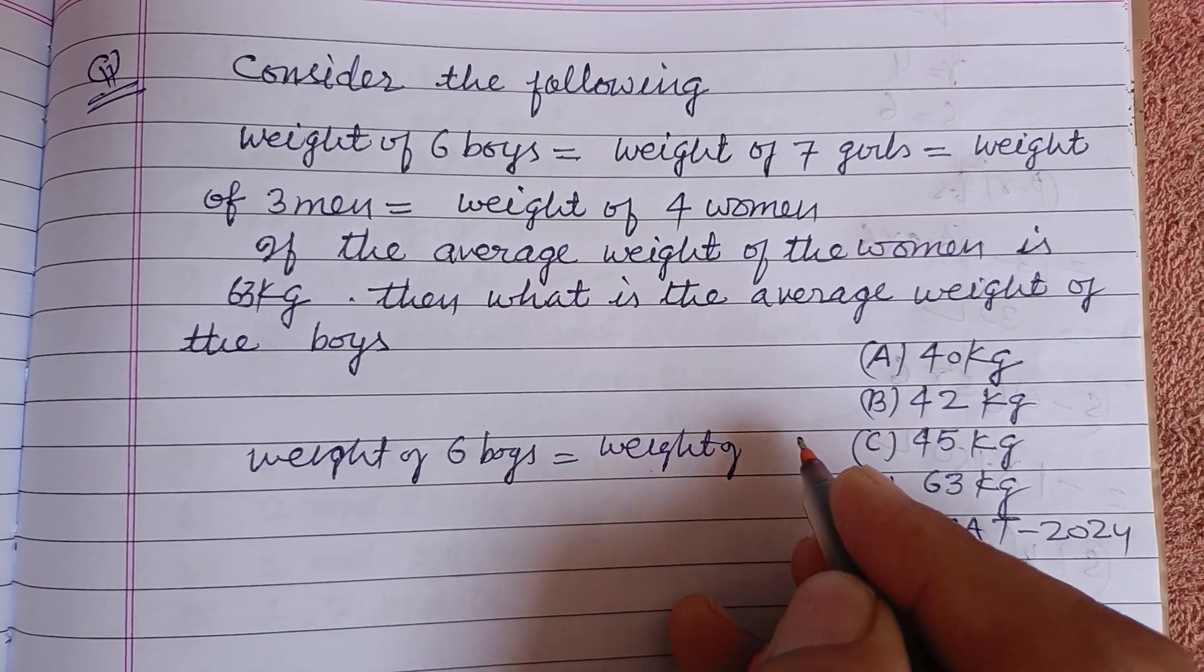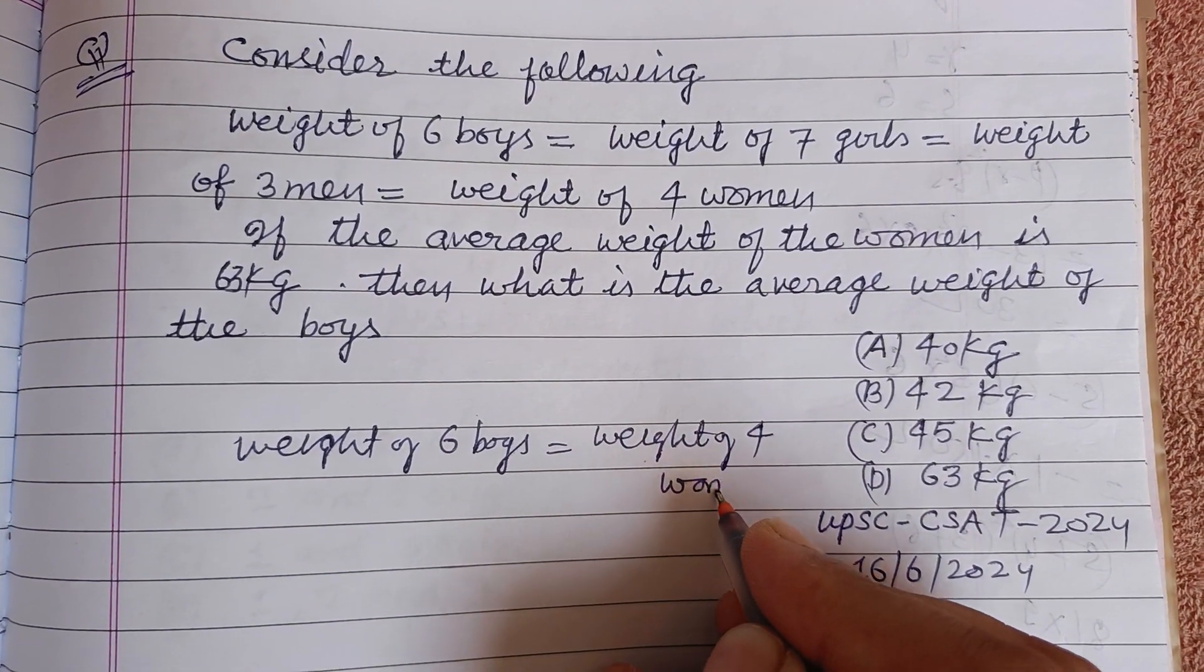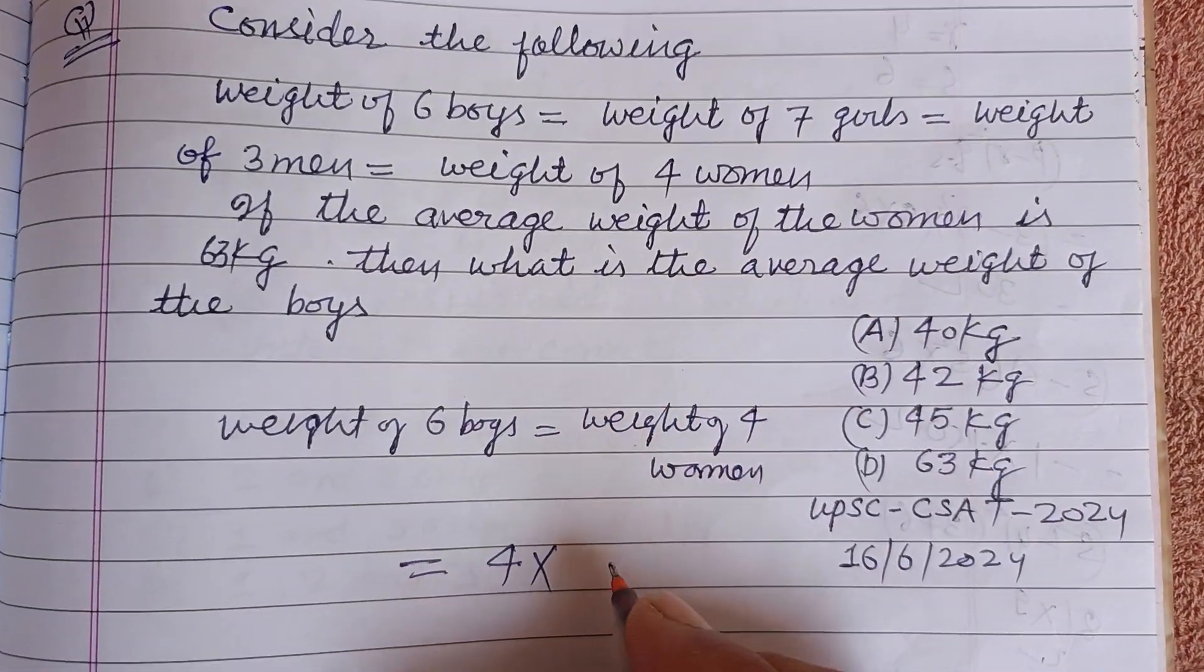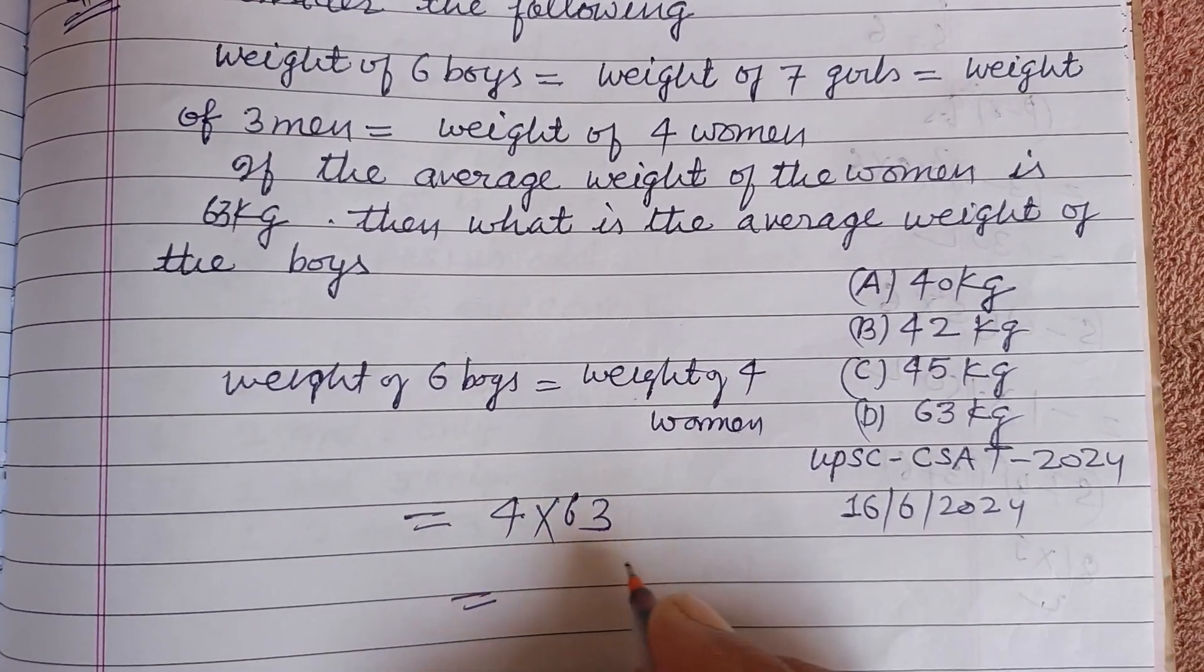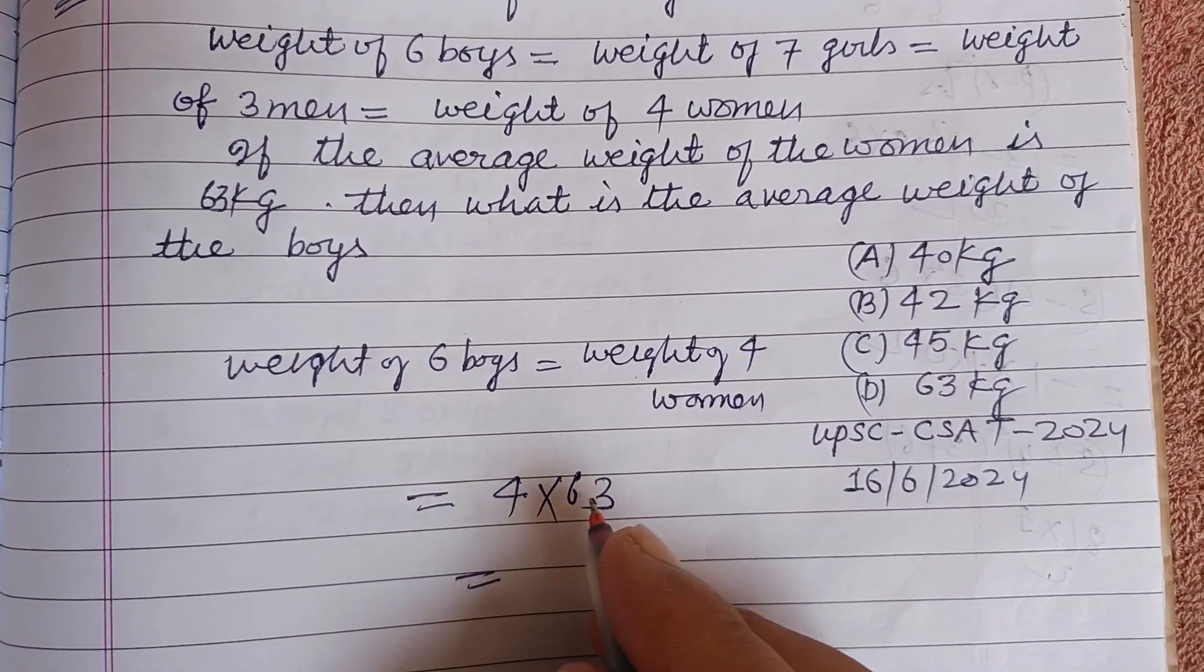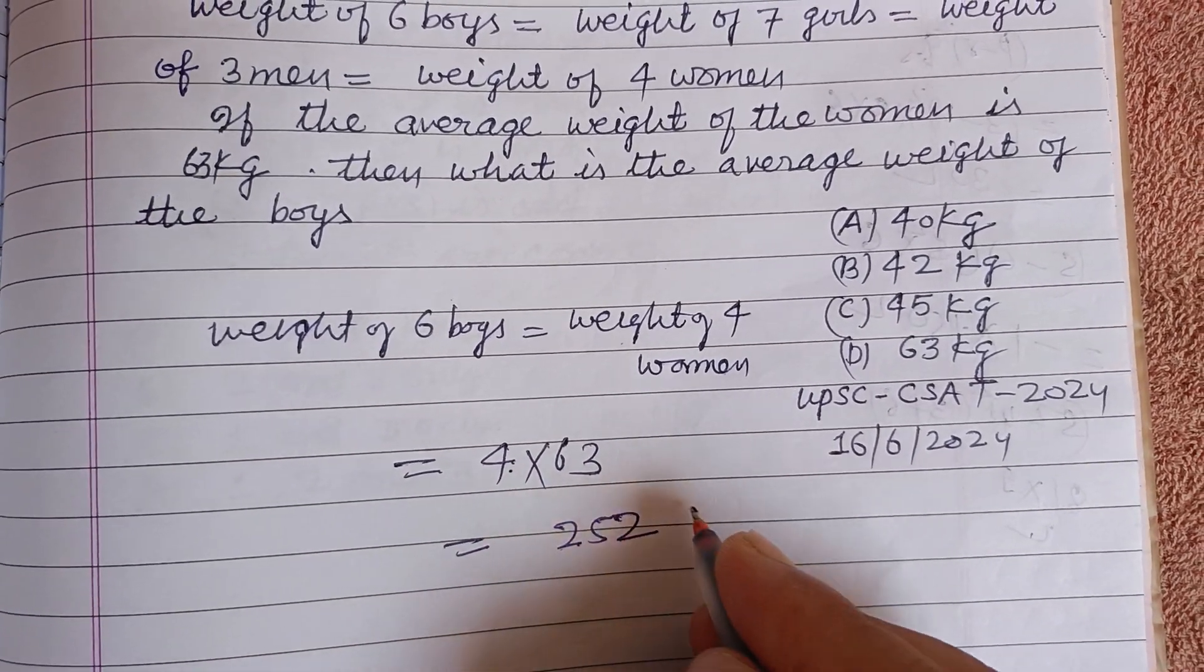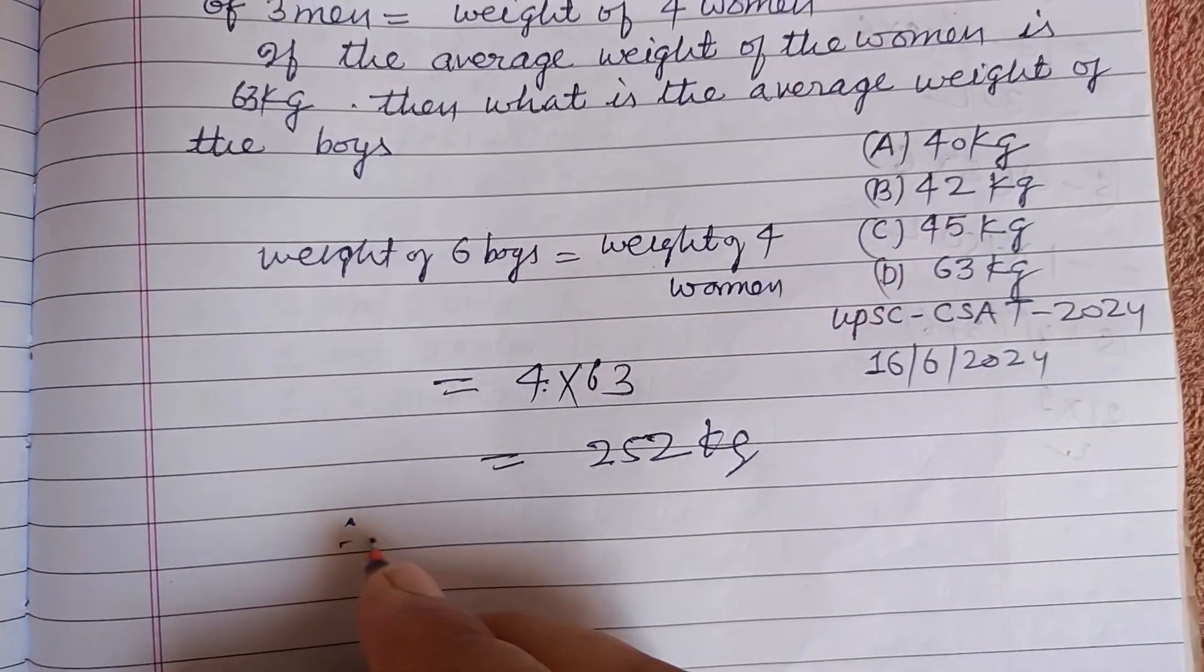Weight of four women, and weight of one woman is given to us as 63. So this is 4 times 63 equals 252 kilogram. Therefore, weight of six boys equals 252 kilogram.